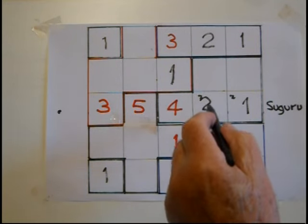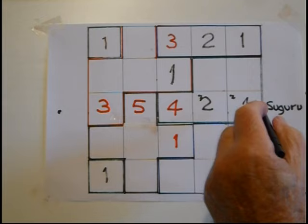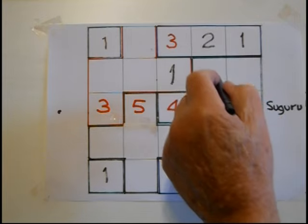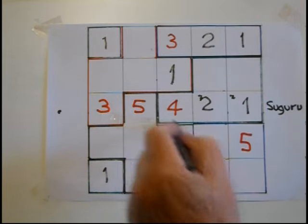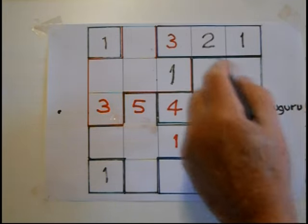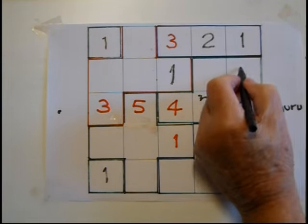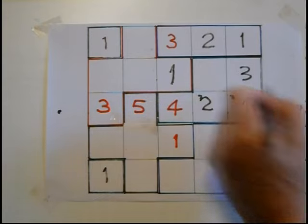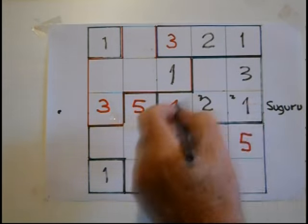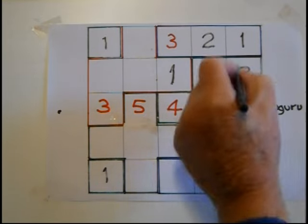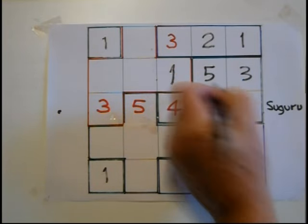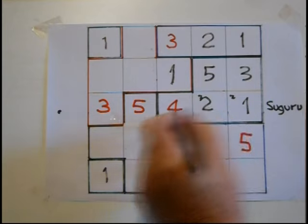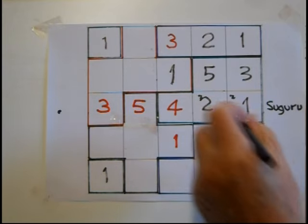Therefore 2 must be there. So we have 1, 2, 3, and 5; 3 can't be there in this block so it's got to be there. All that's left in this block is 5, giving us 1, 2, 3, 4, 5.